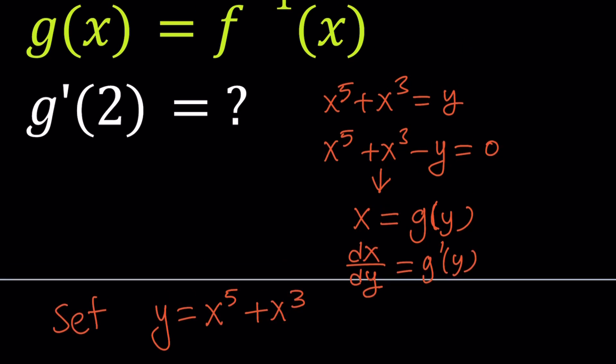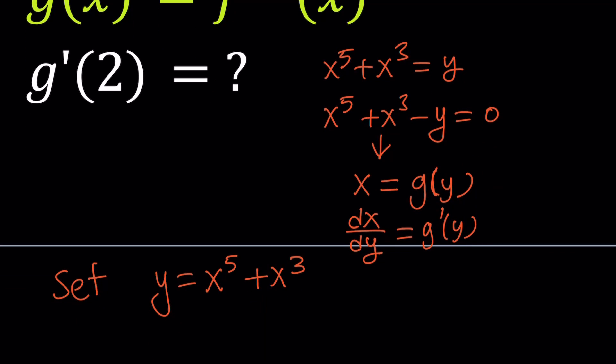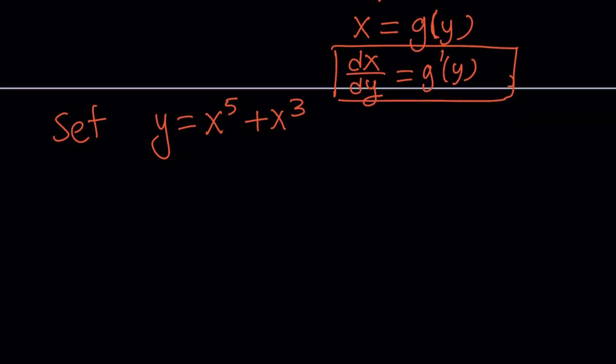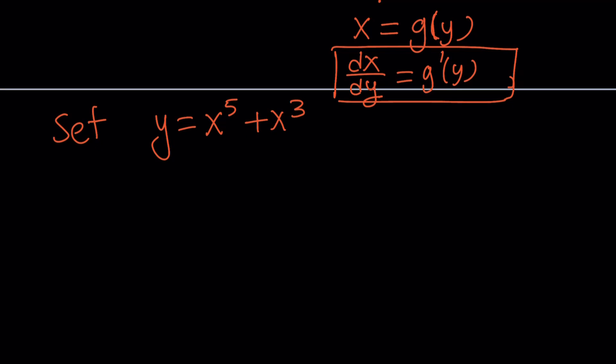The derivative of g would be dx/dy, which is g'. Since we're trying to find g'(2), we would replace y with 2. But it's impossible to find x in terms of y. Since we have y in terms of x, we can find dy/dx. This is a polynomial. Using the power rule, if you have x^n and differentiate it, it becomes n times x^(n-1). So that's going to be 5x^4 + 3x^2.